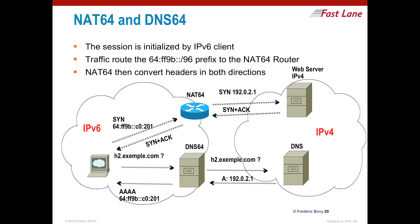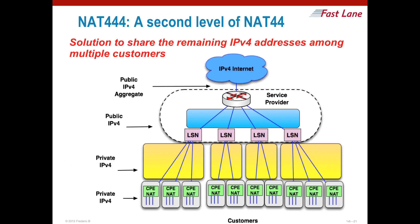NAT64 comes in two flavors: stateless and stateful. In stateless mode it is a one-to-one translation — one IPv4 address for one IPv6 address. With the stateful version, it is possible to save IPv4 addresses by using the same IPv4 address for many IPv6 addresses.